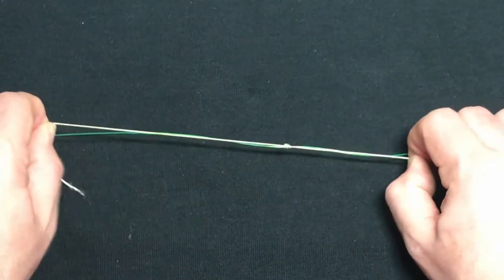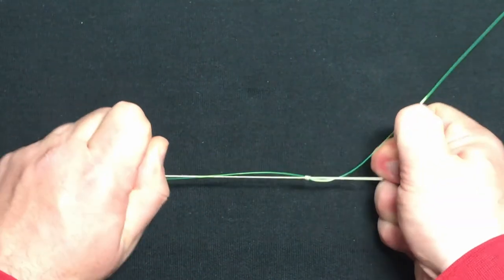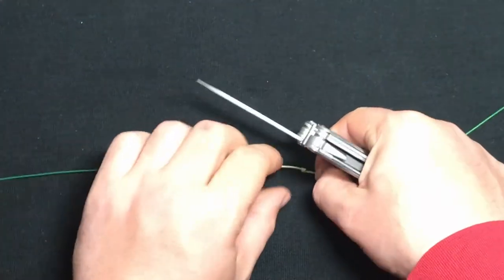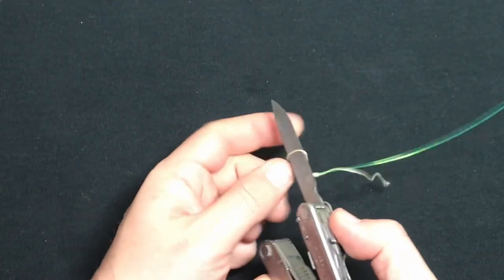Now we're going to take our tag ends, pull them tight, and then trim off these tag ends so there's not so much line flying around all over the place.